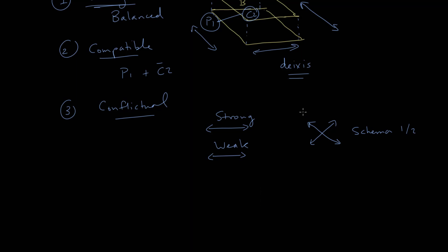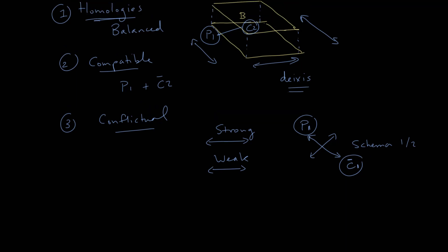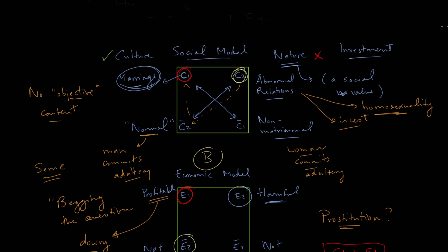For instance, we might take P1 — desired sexual relationships — from our personal set of values, and then take negative C1, which would be non-matrimonial relationships, and these things become conflictual. Now this can get confusing because there are a lot of letters and terminology, but I do think it's useful — not necessarily to figure out every last combination possible, but to jumpstart your thinking, to allow you to look at logical possibilities.